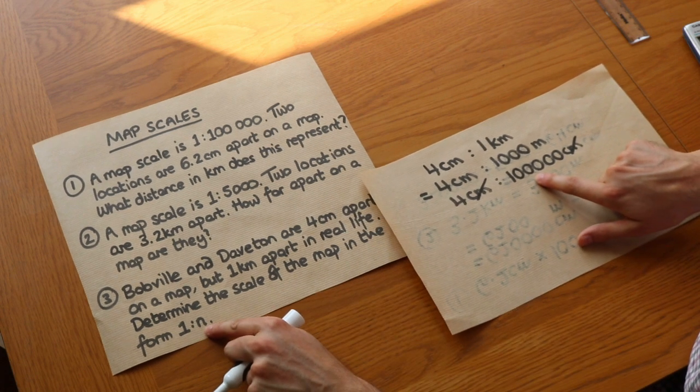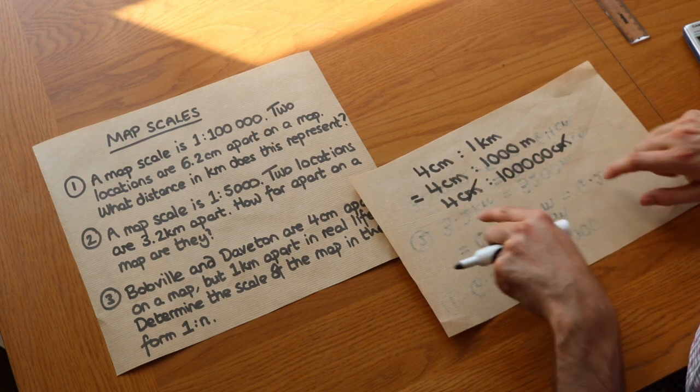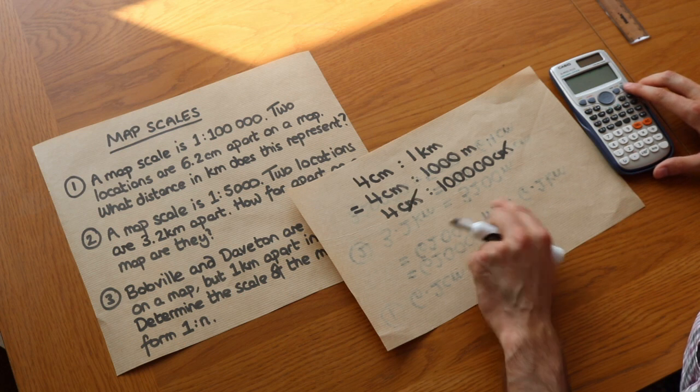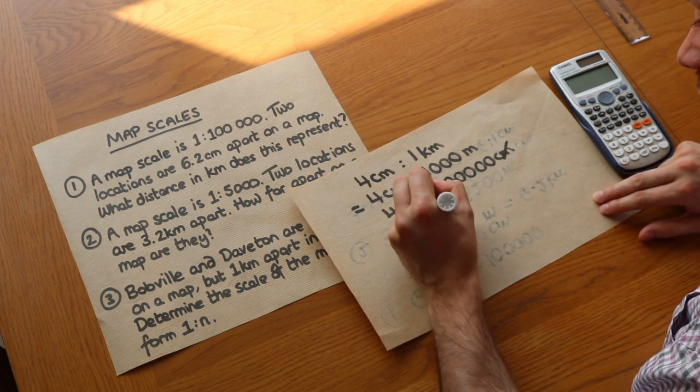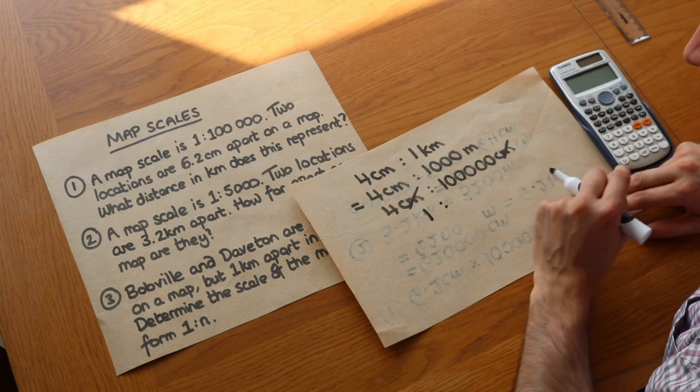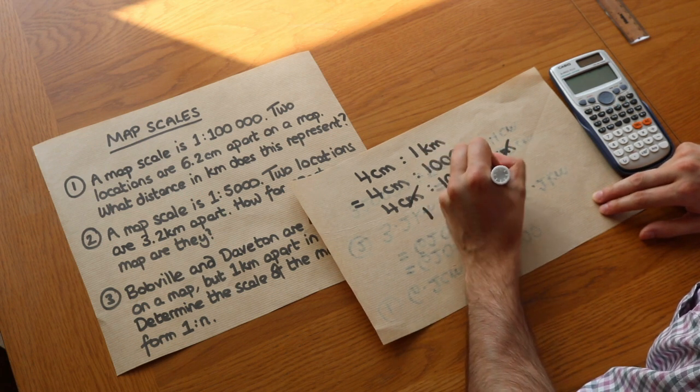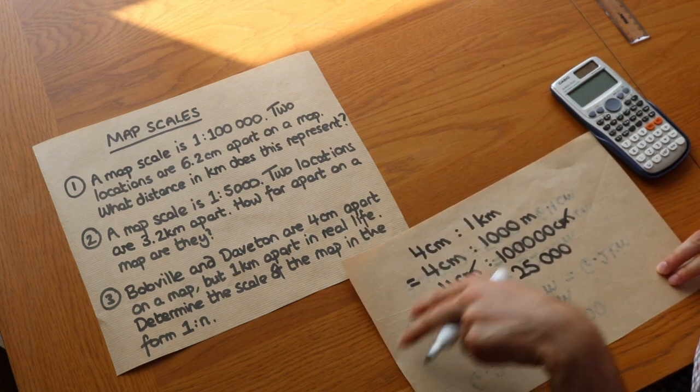But we want one to something. We need to divide both sides of the ratio by four because we can do that with a ratio just like we can with simplifying a fraction. So we just need to divide that by four. If we divide a hundred thousand by four we get twenty-five thousand, and that would be the final answer.